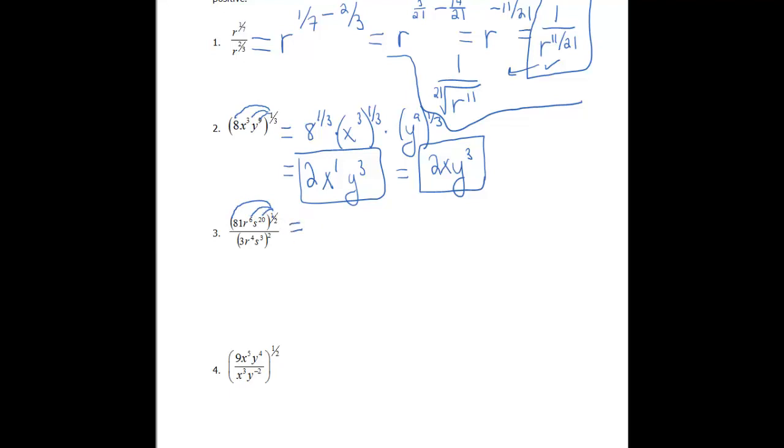So that's gonna look like, so 81 to the 1/2 power is 9, because the square root of 81 is 9. Or you can ask yourself, what times itself 2 times will give me that 81, and that's a 9. Then we're gonna have r to the 6 to the 1/2. So again, because we have a power to a power, you wanna multiply. So that's gonna give us r to the 3rd. And s to the 20th to the 1/2 power, power to power, you multiply. So that'll give you s to the 10th.